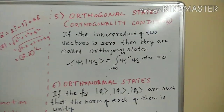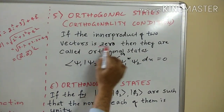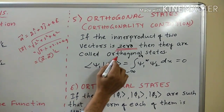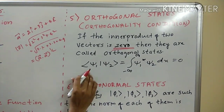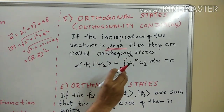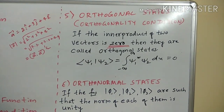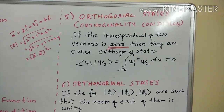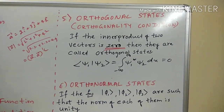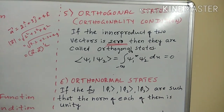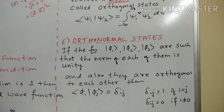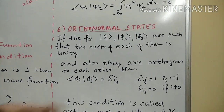When we take the inner product of two different states and if the inner product comes out to be 0, then those two vectors are called orthogonal states, and this condition is called the orthogonality condition. Similarly, in the case of ordinary vectors, if the dot product of two vectors is 0, we say that both vectors are orthogonal.